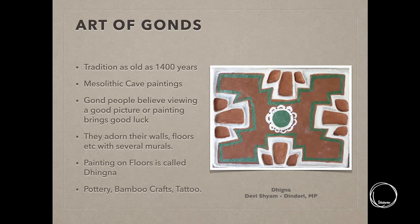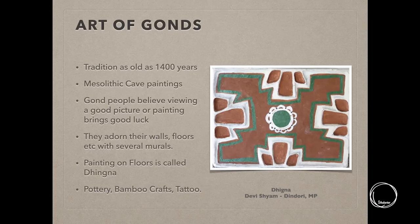Gondi art is basically a form of mural art. Paintings on floors are called 'Dhigna.' Dhigna is best understood as another version of rangoli — there are various versions of rangoli in India, and this is one type in which terracotta clay is also used to create different shapes, making it a semi-permanent setup. Apart from that, they are very artistically inclined with various versions of pottery, household elements like baskets and canes, bamboo crafts, and they also have a tradition of tattooing.